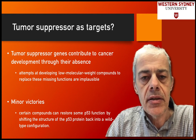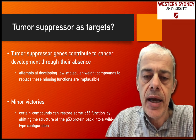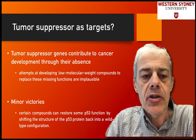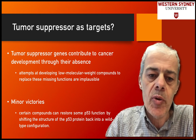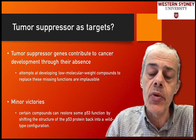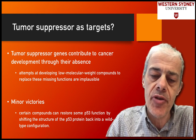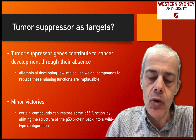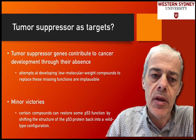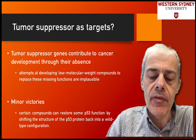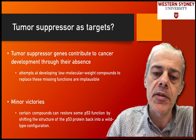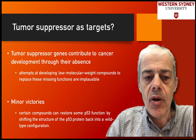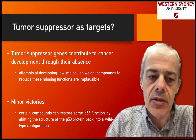Does it make sense to target tumor suppressors with anti-cancer drugs? Tumor suppressors contribute to cancer through their absence — it's the absence of the tumor suppressors that leads to uncontrolled growth. Normally these proteins are involved in regulating growth; they're like the brake system in a car. So it's the absence of the tumor suppressor that leads to the cancer.